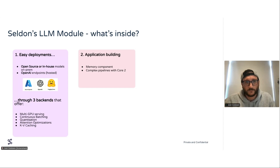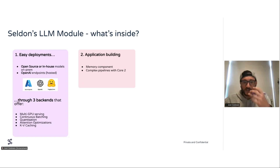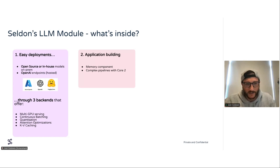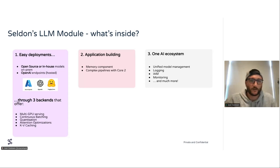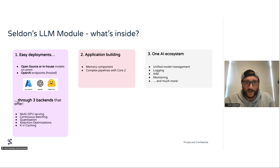You get the application building: the memory component using those complex pipelines with Seldon Core V2, which enables that chatbot experience and takes out the need to build out the whole memory aspect of your chatbot use case. And as I said, one AI ecosystem — having all the logging, the management of all the models, LLM or traditional or a mixture of both for your use case — having that in a managed and structured way so you're able to manage all of them together, as opposed to going to seven or eight different places to see all the performance and aspects of what the models are doing.